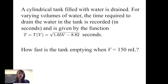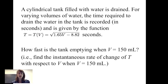Let's consider an example. Suppose we have a cylindrical tank filled with water that is drained. For varying volumes of water, the time required to drain the tank is recorded in seconds, given by the function t(v) equals the square root of 1.65 times v minus 8.82. How fast is the tank emptying when volume equals 150 milliliters? In other words, find the instantaneous rate of change of time with respect to volume when volume is 150 milliliters.